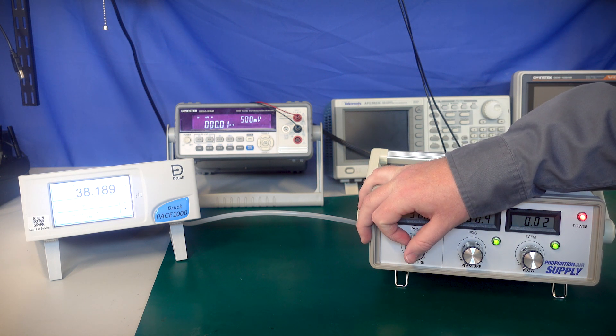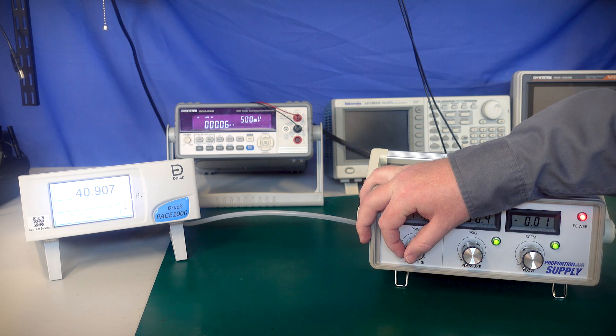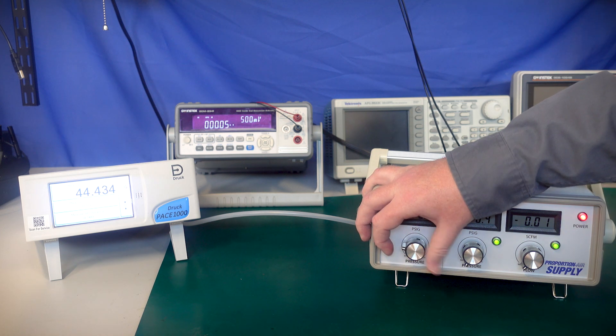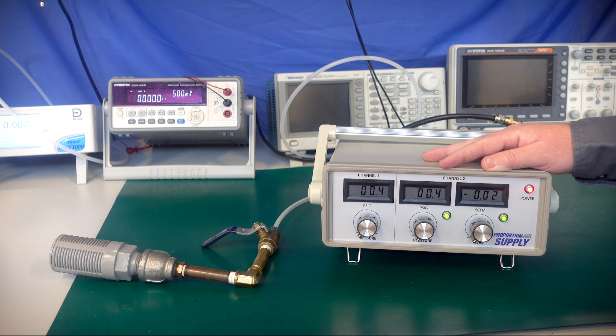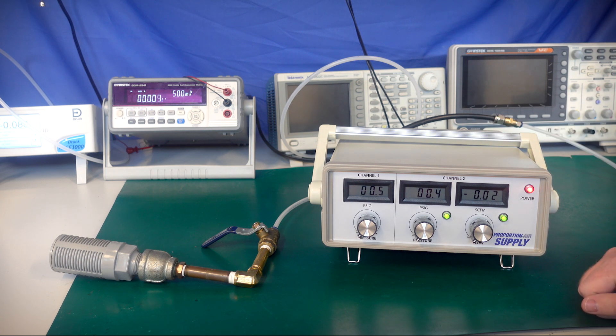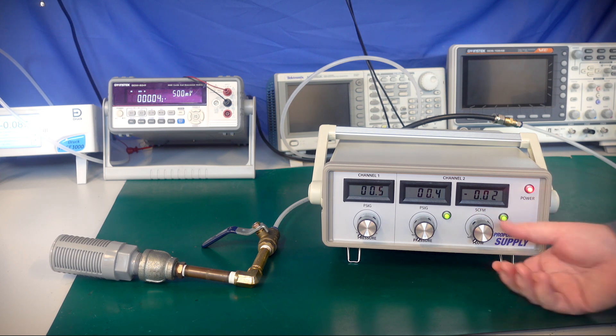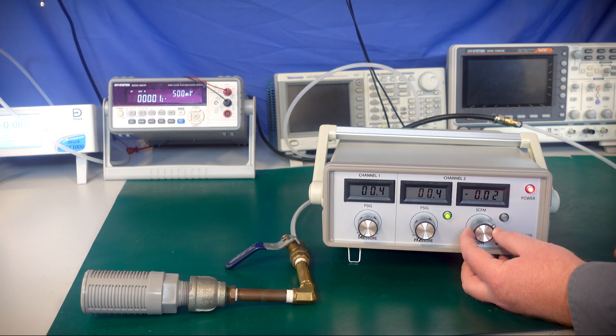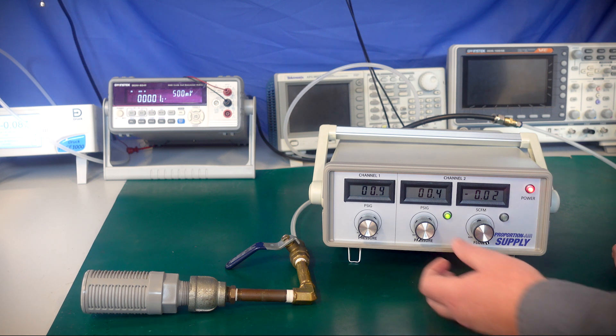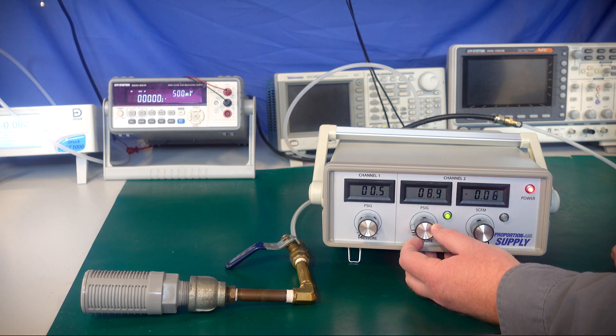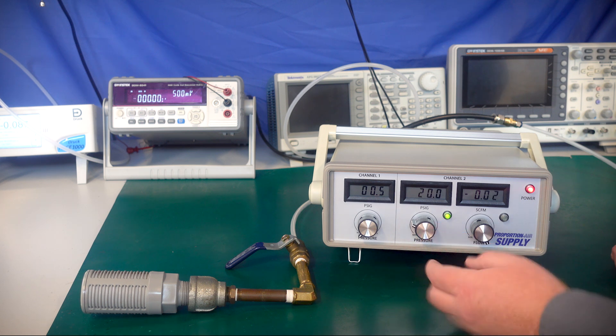Channel two controls pressure and flow. Just like on an electronic power supply, you control one and limit with the other. For this example, you turn the flow up to the maximum and then we set a desired pressure. We're going to go to about 20 psi here.